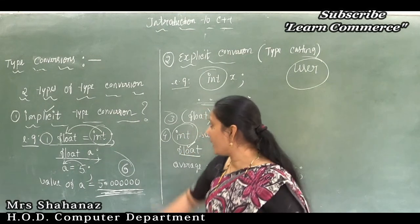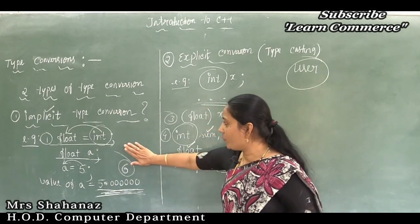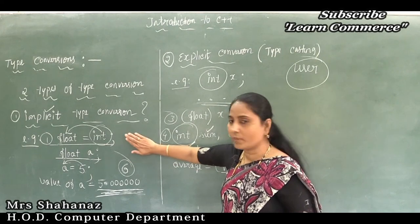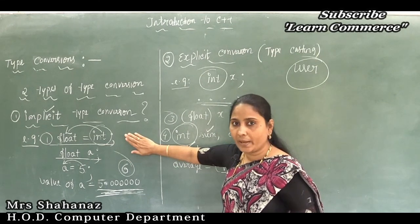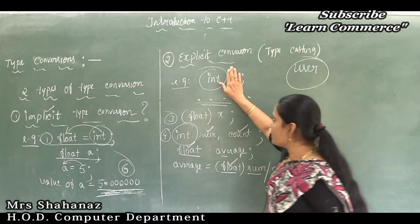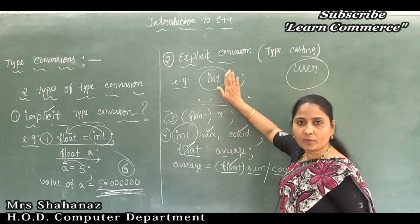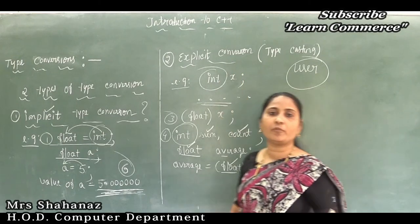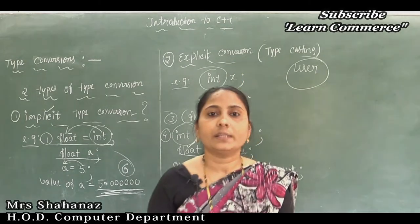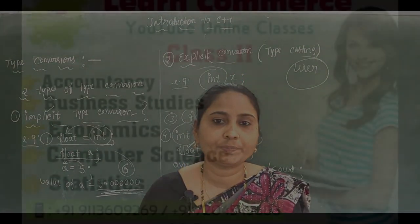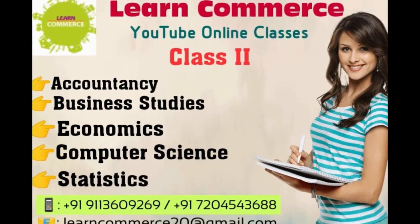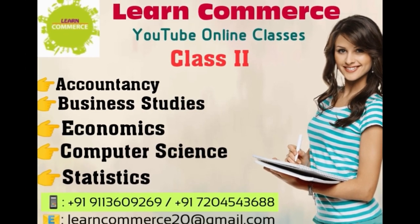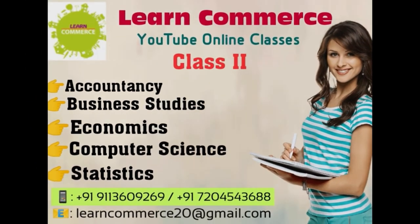To summarize: implicit type conversion is performed by the compiler, while explicit type conversion is performed by the user. Don't forget to like our video and subscribe to our YouTube channel for all updates.